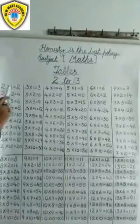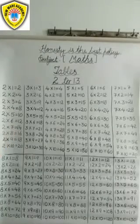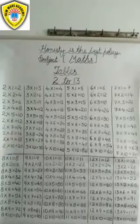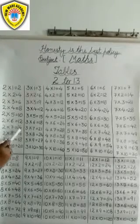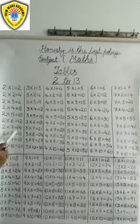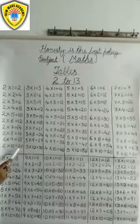2 1s are 2. 2 2s are 4. 2 3s are 6. 2 4s are 8. 2 5s are 10. 2 6s are 12. 2 7s are 14. 2 8s are 16. 2 9s are 18. 2 10s are 20.